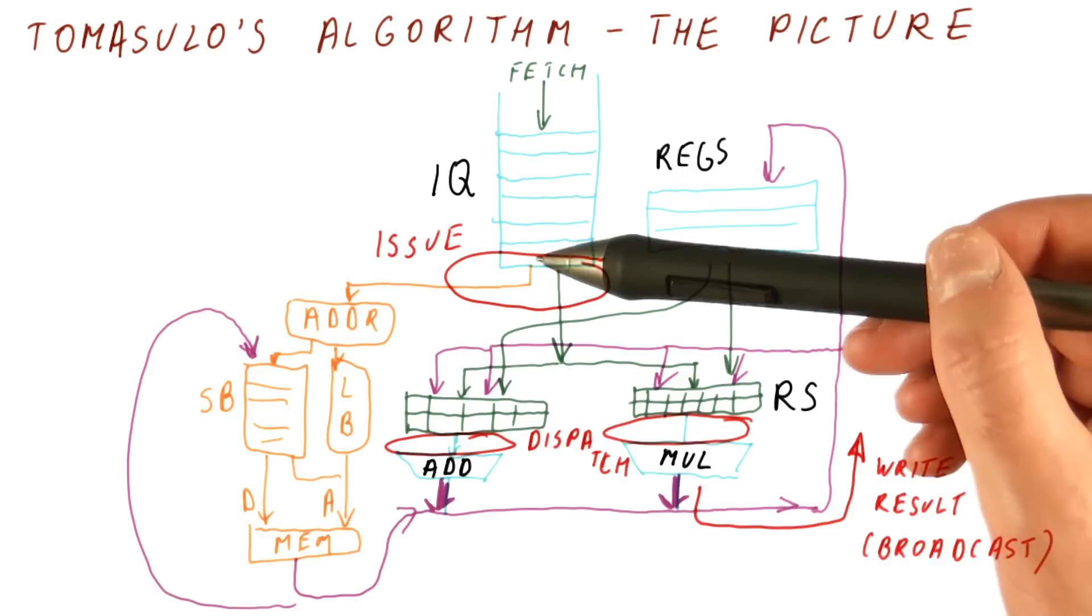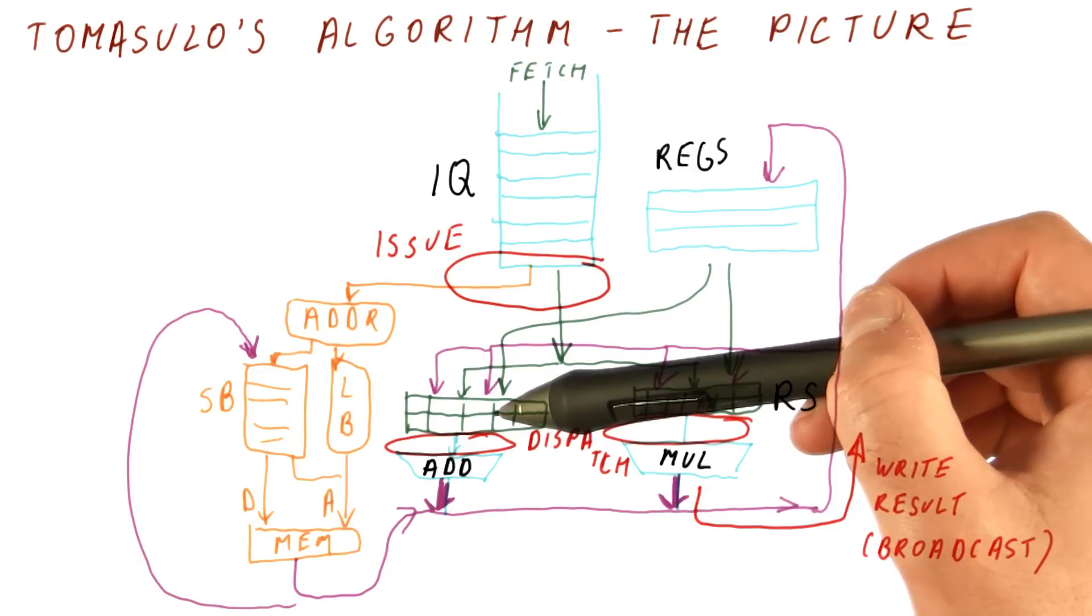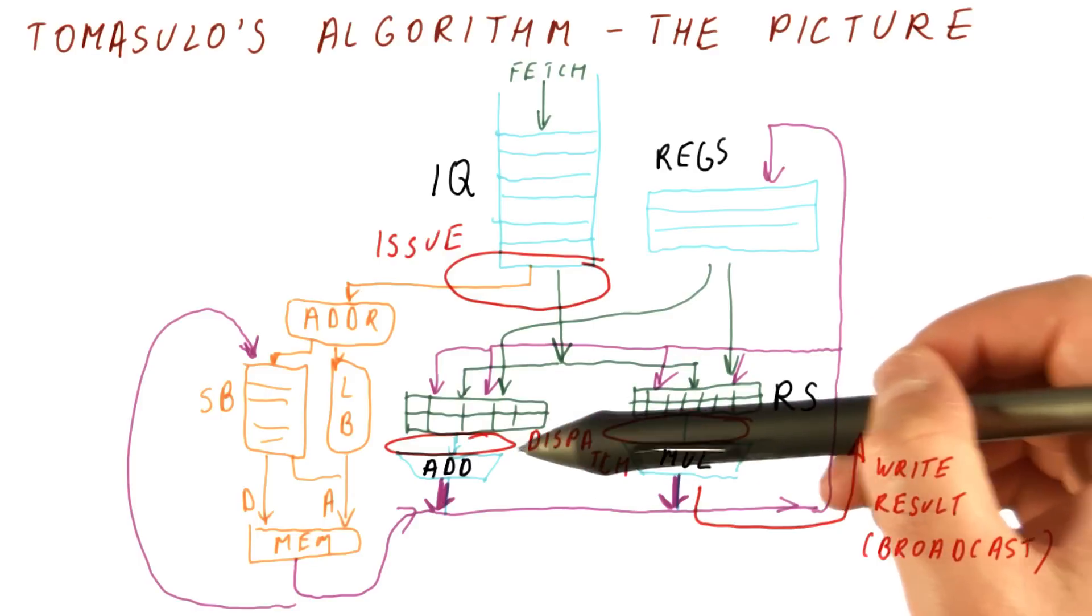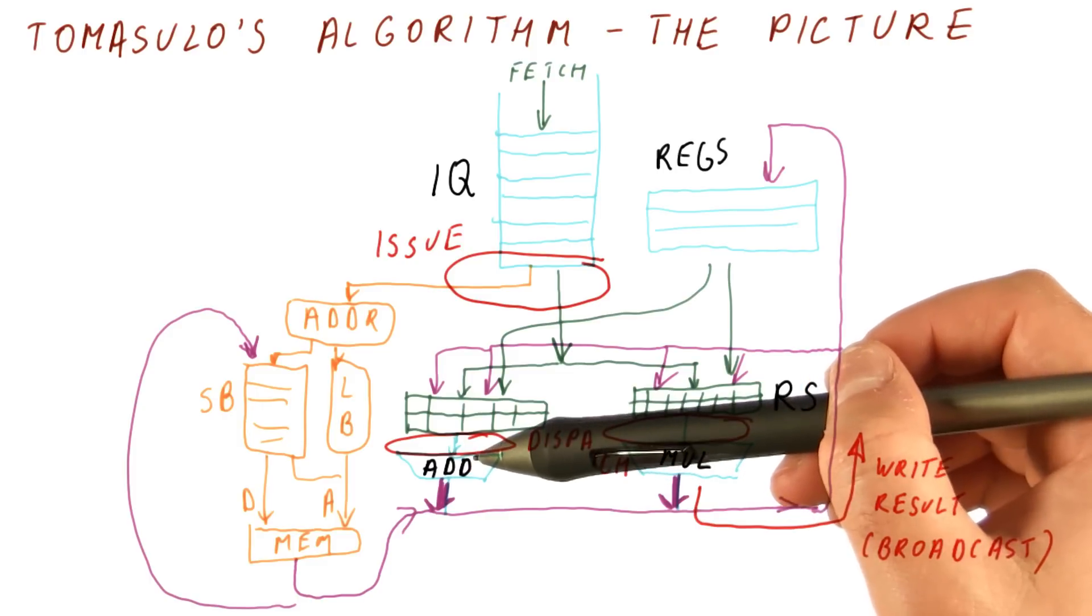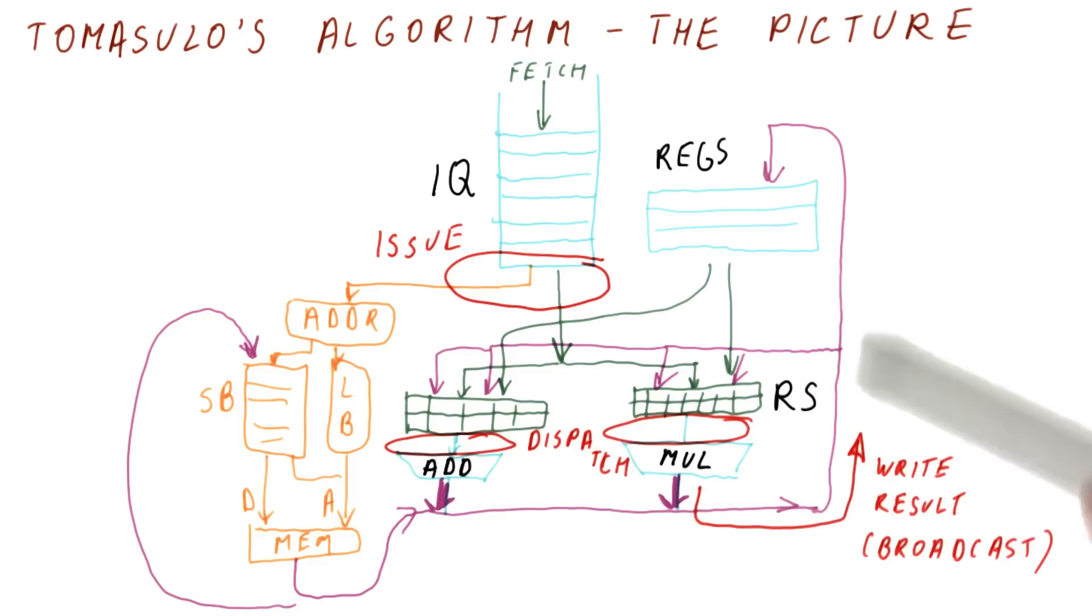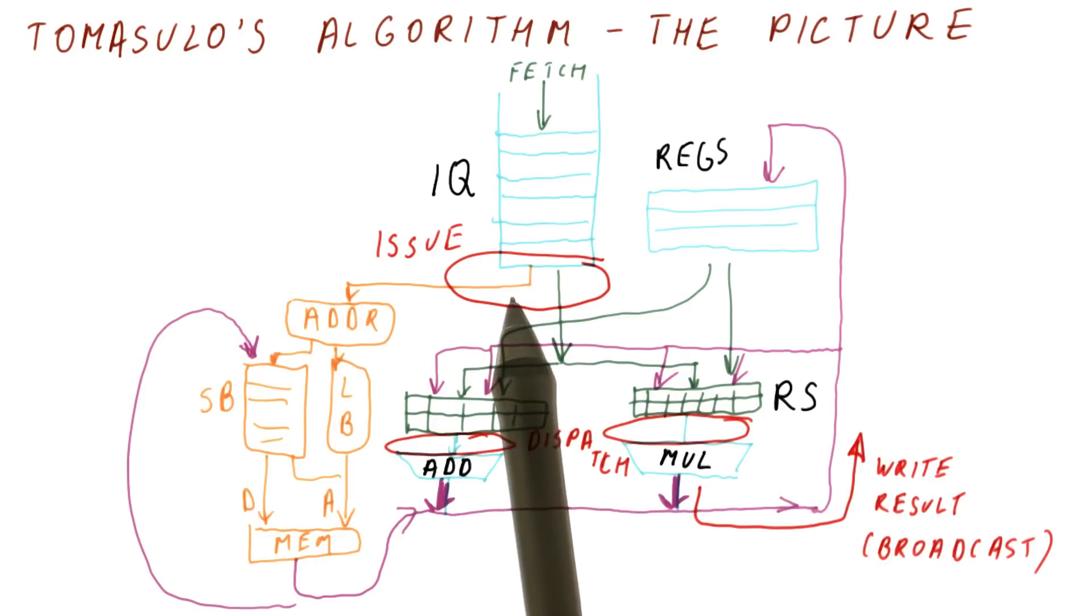Every instruction will be issued, meaning it gets to the reservation station. Eventually it gets to dispatch because all of its inputs are ready and it gets to go to the unit. Once it's done, it's going to write the result, and that is when we consider the instruction completed. So now let's see what happens when you issue, when you dispatch, and when you write result.